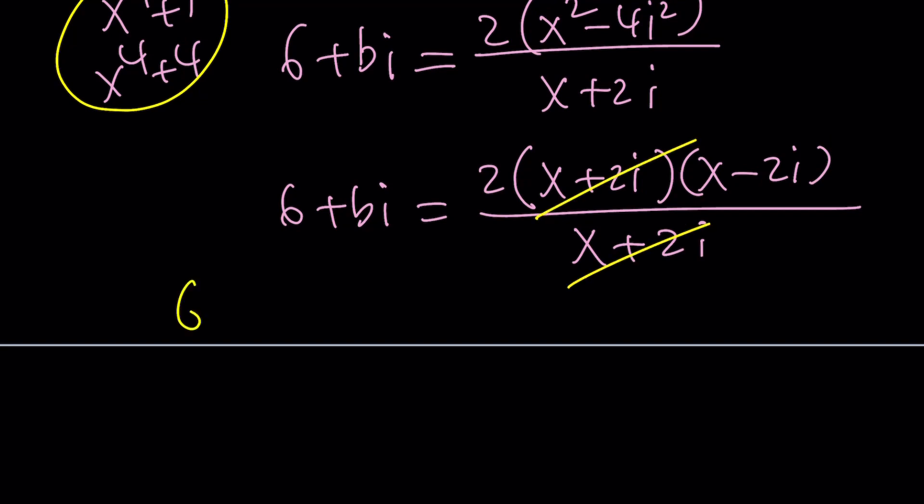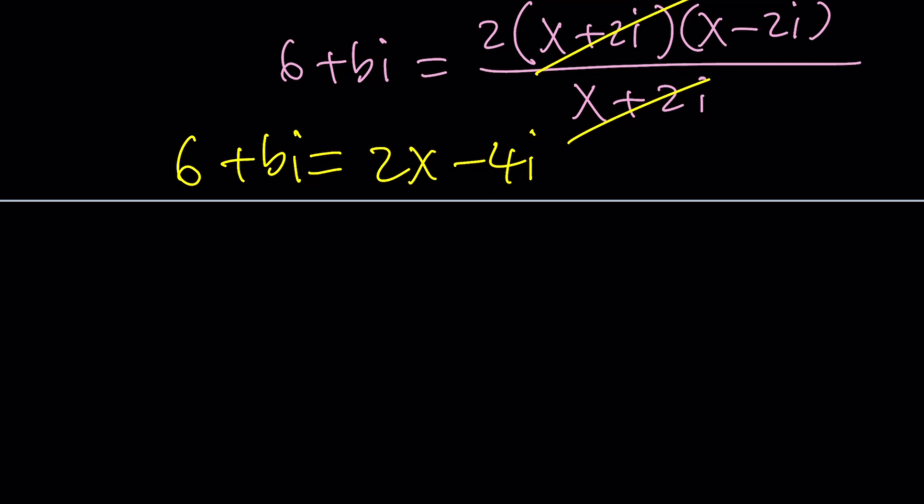From here, if two complex numbers are equal, remember the idea, the real parts are equal. So 2x equals 6, which means x equals 3. And imaginary parts are equal, which means b is equal to negative 4. That gives us the same solution.